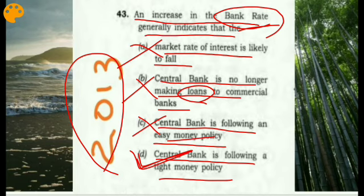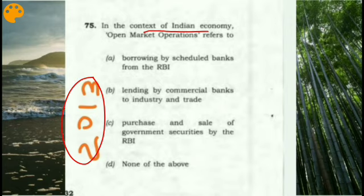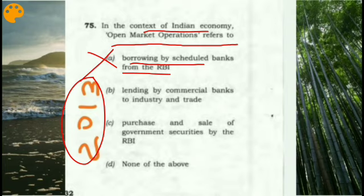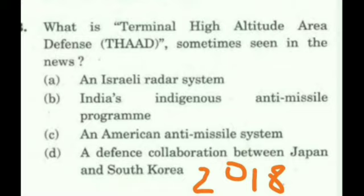Another prelims 2013 question: 'In the context of the Indian economy, open market operations refers to...' The correct answer is the purchase and sale of government securities by the RBI. Wrong options include borrowing by scheduled banks from RBI, and lending by commercial banks to industry and trade.